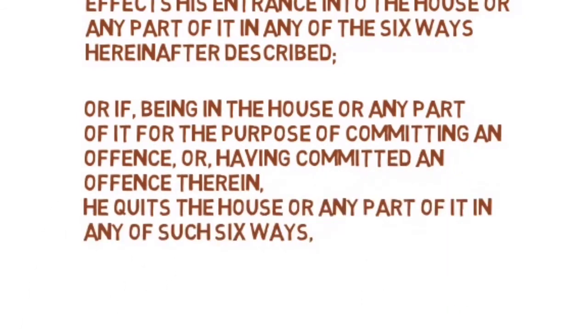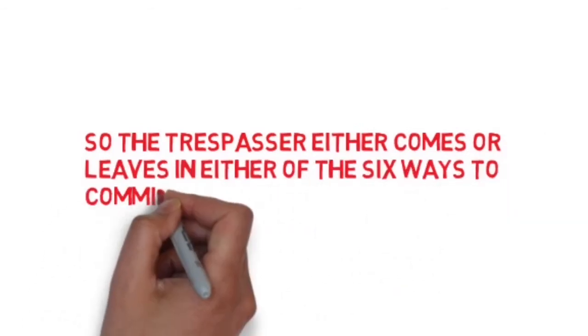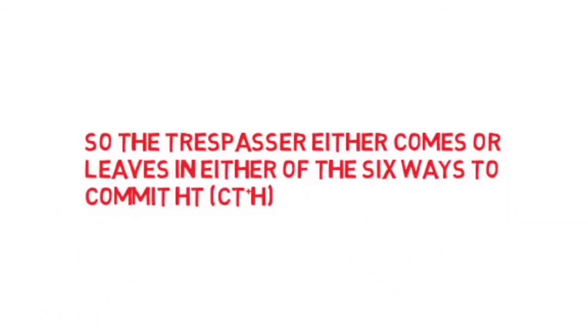for the purpose of committing an offense, or having committed an offense there, and he quits the house or any part of it in one of these six ways. The crux of it is: if the trespasser enters or exits in any of the six ways given in section 445, then it becomes house breaking.